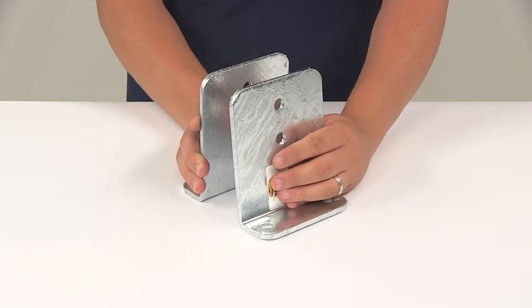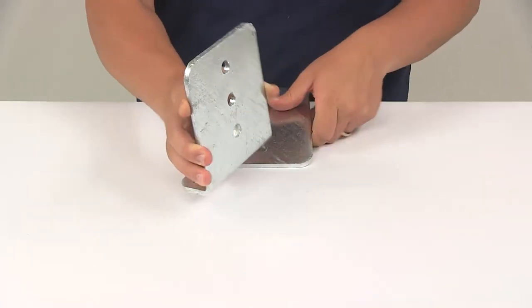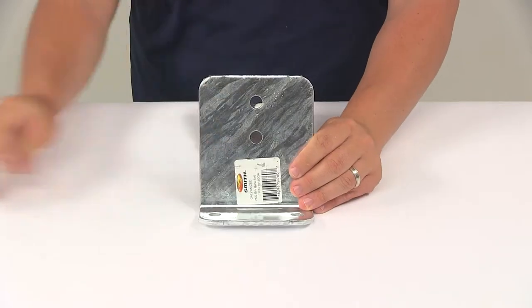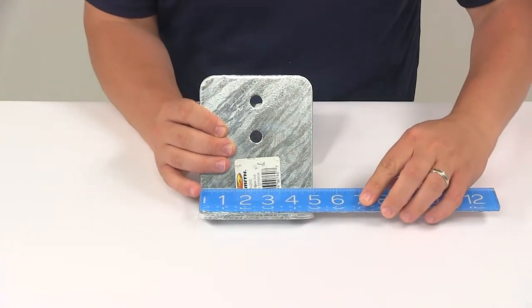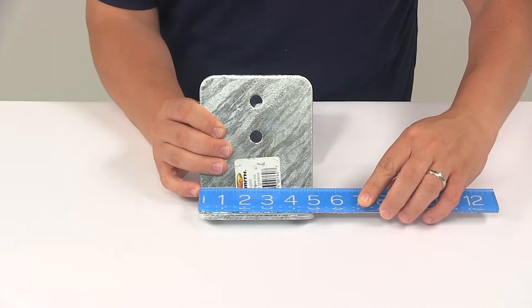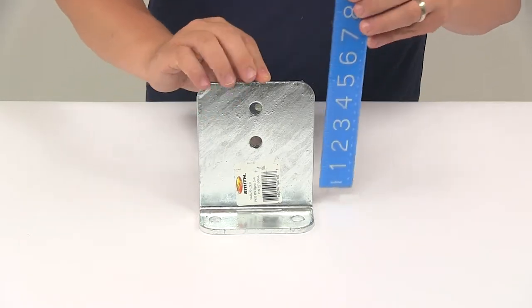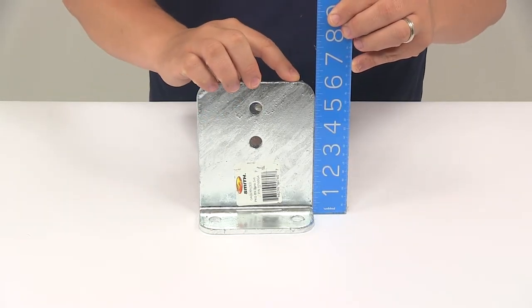You're going to get two brackets with this part number. Taking a look at the dimensions, going edge to edge, it's going to measure five inches. Overall height, it's going to be about six inches tall.